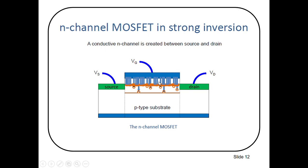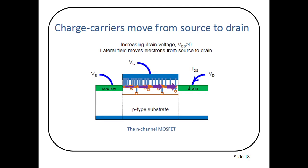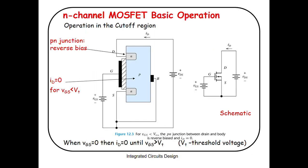Your channel is now formed, but current is still not flowing. You have to apply a positive drain voltage — your VDS should be greater than 0. When you apply a drain voltage greater than 0, the lateral field will move electrons from source to drain. This was basically the process of channel formation and how current flows between source and drain. Now we will discuss the different regions of operation of the MOSFET.